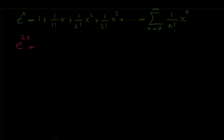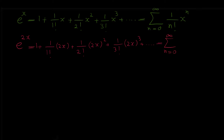So the Maclaurin series of e to the 2x is: 1 plus 1 over 1 factorial times 2x, plus 1 over 2 factorial times (2x) squared, plus 1 over 3 factorial times (2x) to the 3, and so on. In sigma form it is: sigma from n equals 0 to infinity of 1 over n factorial times (2x) to the n. If you like, you can open these brackets and write them as 4x squared, 8x cubed, or leave it in the original form.